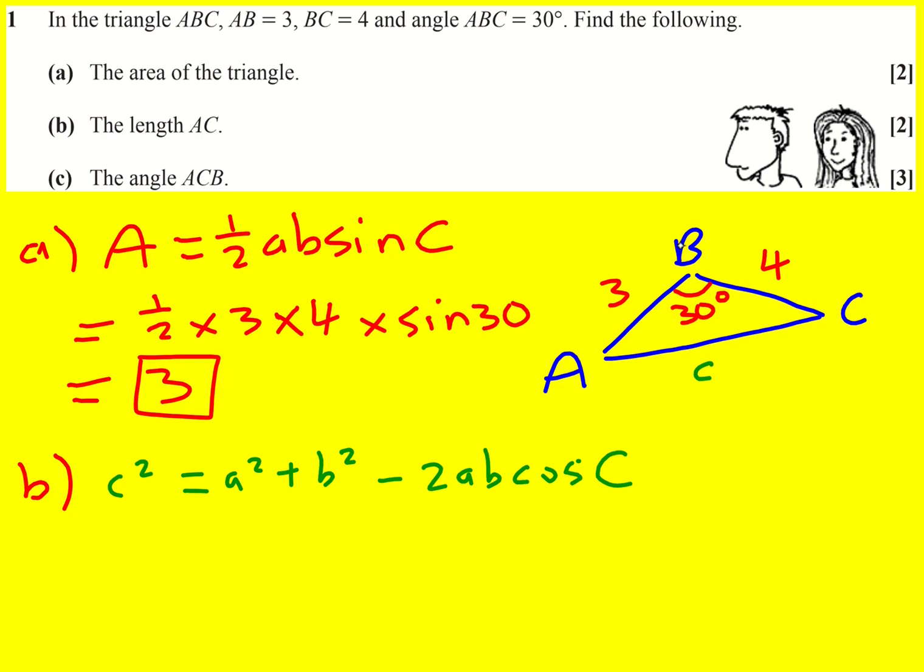So it doesn't matter how the triangle is labeled. I can relabel it and I'm going to actually call this side little c. So actually this angle is going to be capital C. And then that can be A and that can be B. So C squared is going to be 3 squared plus 4 squared minus 2 times 3 times 4 cos 30. I'll work that out.